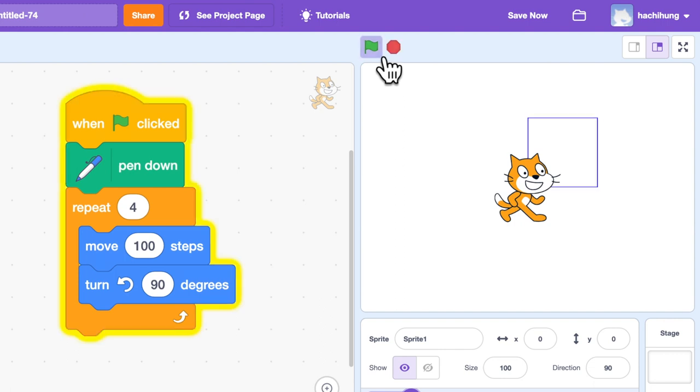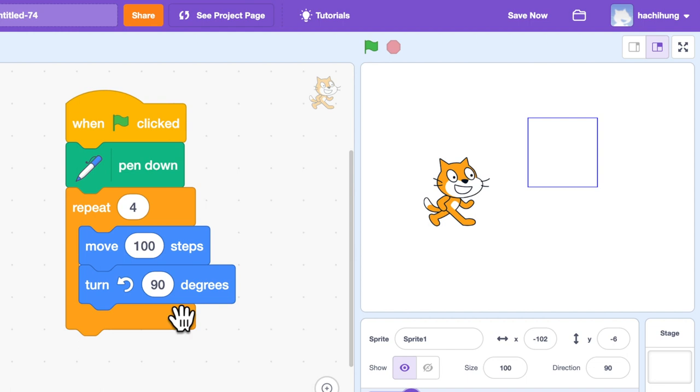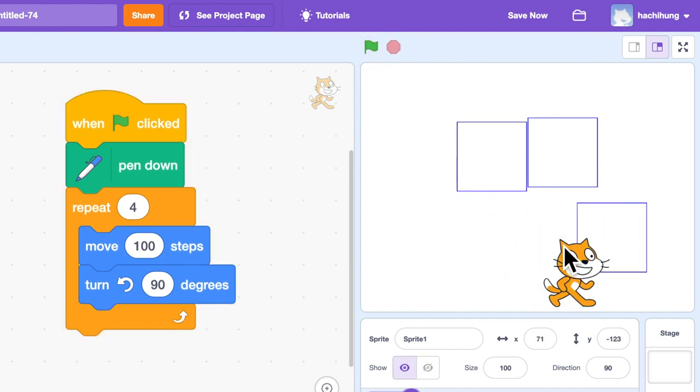If we run this program, we can see that the cat can draw a square in this way. If we run that again, the cat can draw a square in another position. We can repeat like this.